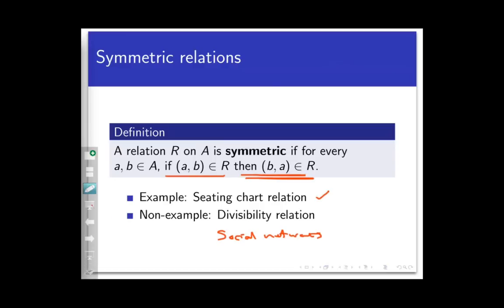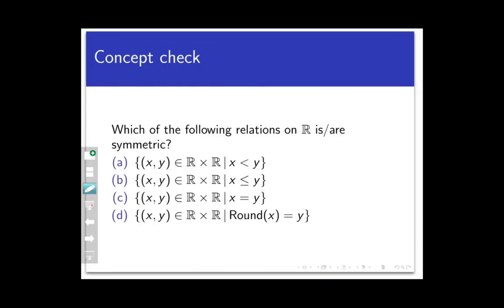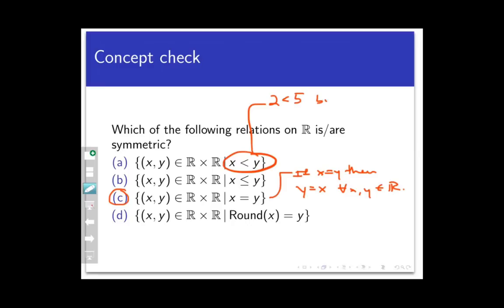Here's a concept check on symmetry using the same four relations. The answer is just the equality relation. If X,Y is in the relation, it means X equals Y, and of course Y equals X, so Y,X is also in the relation. The less-than and less-than-or-equal-to relations are not symmetric: 2,5 belongs but 5,2 does not. The rounding relation is not symmetric either: 4.2,5 is in the relation, but 5,4.2 is not. So those three relations are not symmetric.